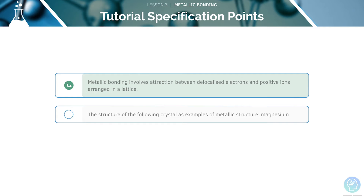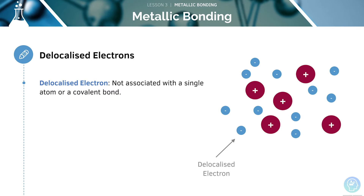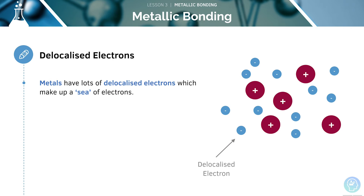First, we will look at metallic bonding in a lattice. An electron is said to be delocalised if it is free to move about because it is not involved in a bond. We can see here that these are delocalised electrons. Metals have lots of delocalised electrons, which are said to make up a sea of electrons.